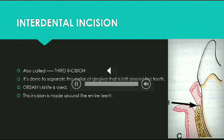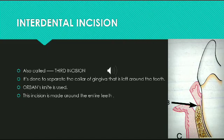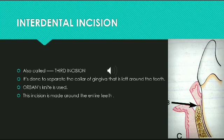Moving on to the other type of incision — the interdental incision, also called the third incision. A periosteal elevator is inserted into the first incision and the flap is separated from the bone. The most apical end of the internal bevel incision is exposed and visible, allowing us to make the third incision to separate the collar of gingiva left around the tooth. For this we use Orban's knife. This incision is made around the entire tooth — around the facial and lingual radicular areas and also the interdental — to connect the facial and lingual segments and free the gingiva completely around the tooth.